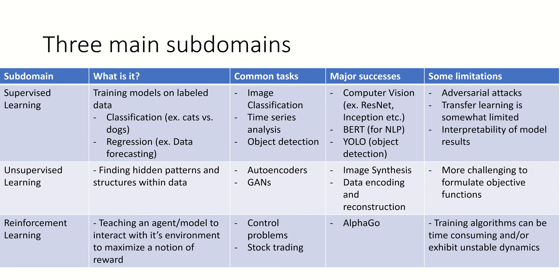We also have, in natural language processing — that's what NLP stands for — BERT, and more recently GPT-3. These are big successes for natural language processing. For object detection, we have the YOLO model — You Only Look Once. Despite these successes, there are some limitations, one of them being adversarial attacks, where you essentially craft some noise and add it to a data point in an effort to fool a neural network into predicting something you wouldn't want it to ordinarily predict.